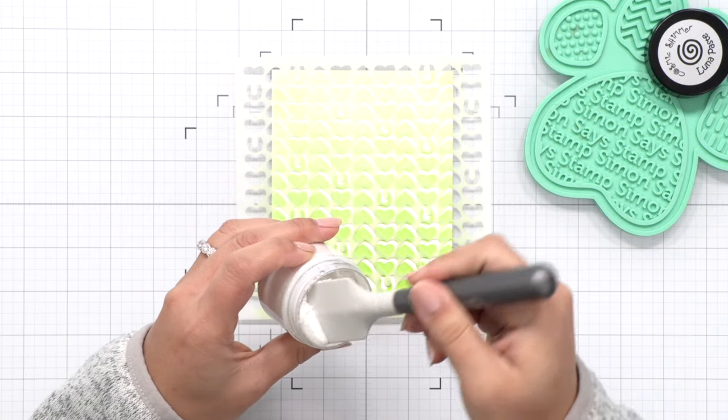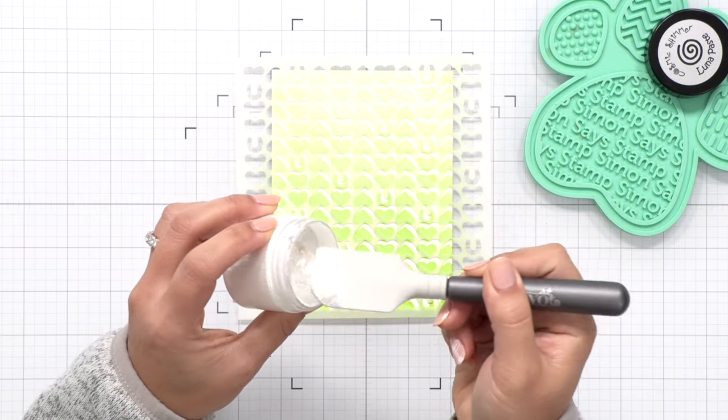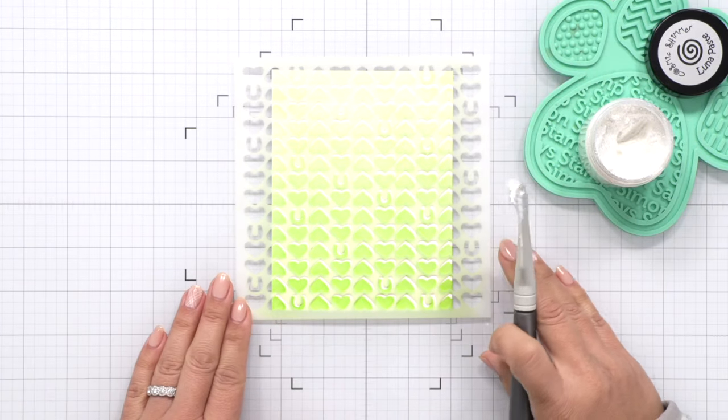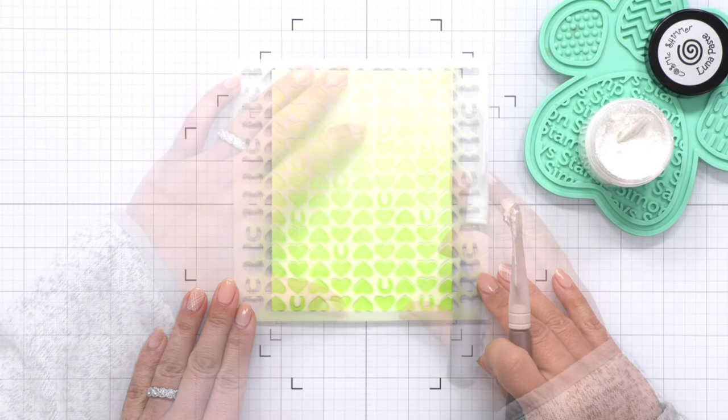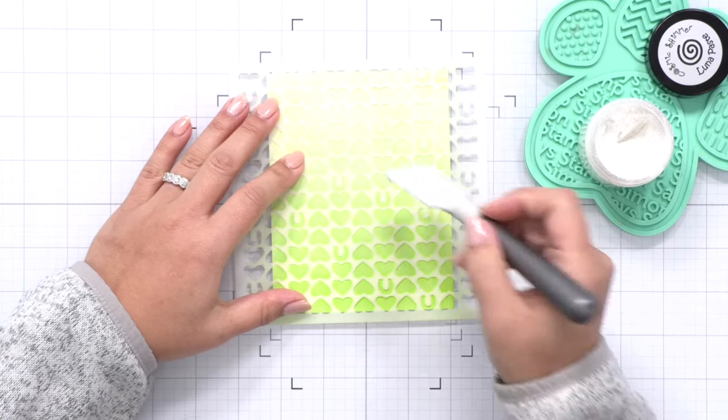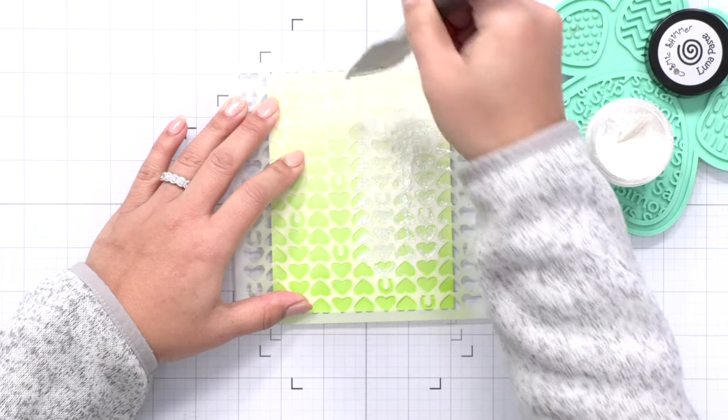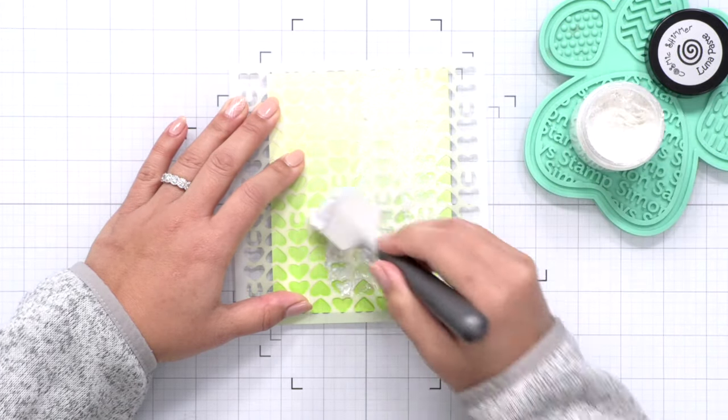This is some Cosmic Shimmer Luna Paste and what I love about this paste is it's very opaque and the glitters in it are super fine so you get a really almost metallic look and it's really shimmery depending on the light or the angle at which you hold your project.